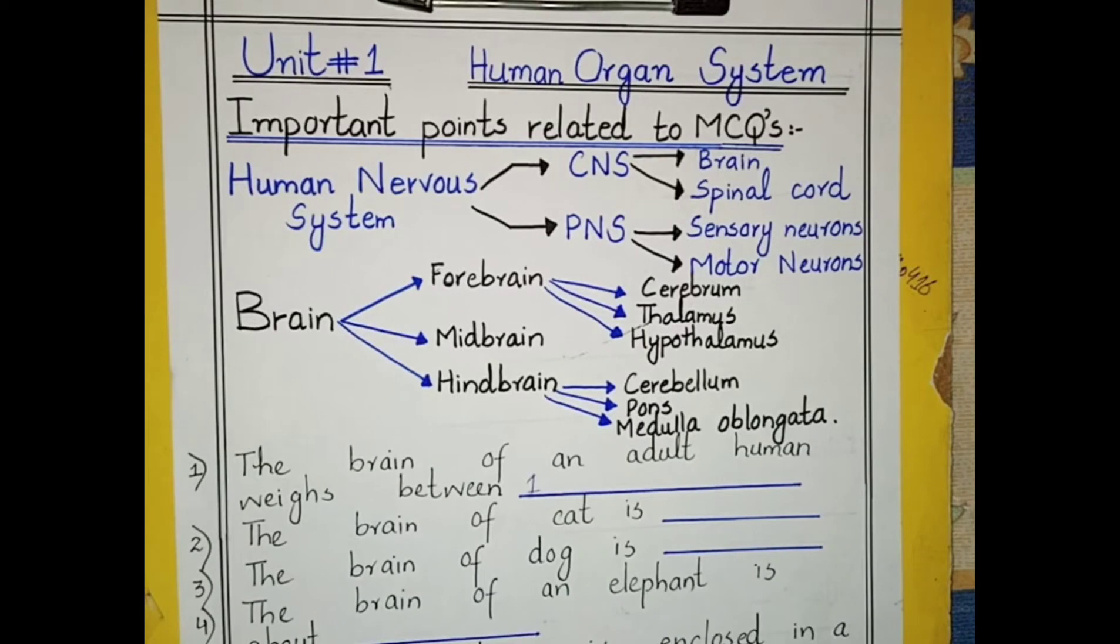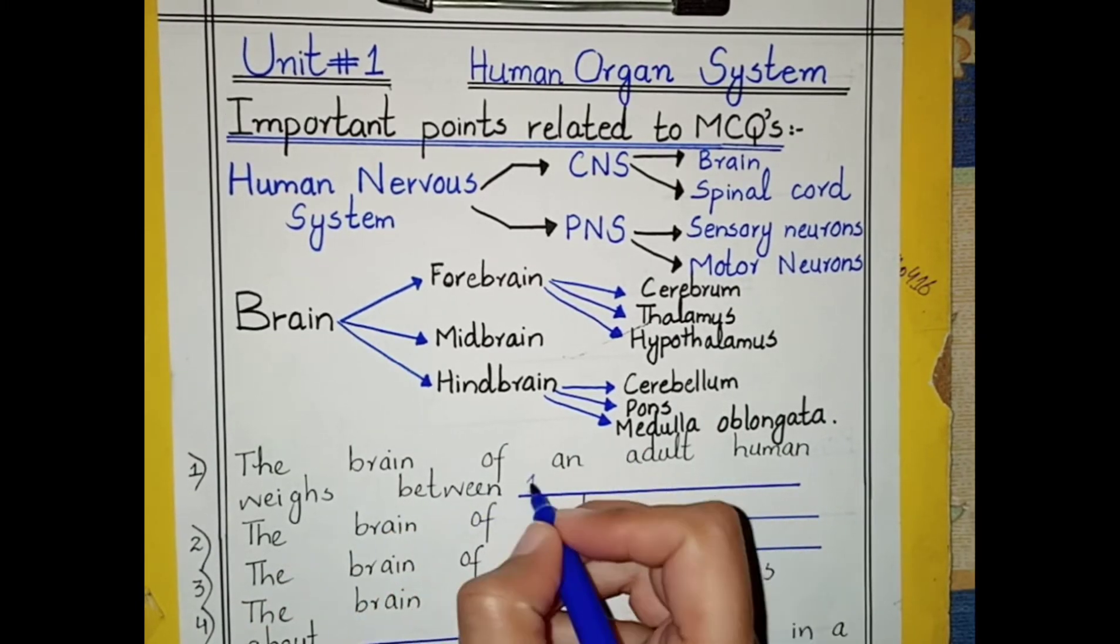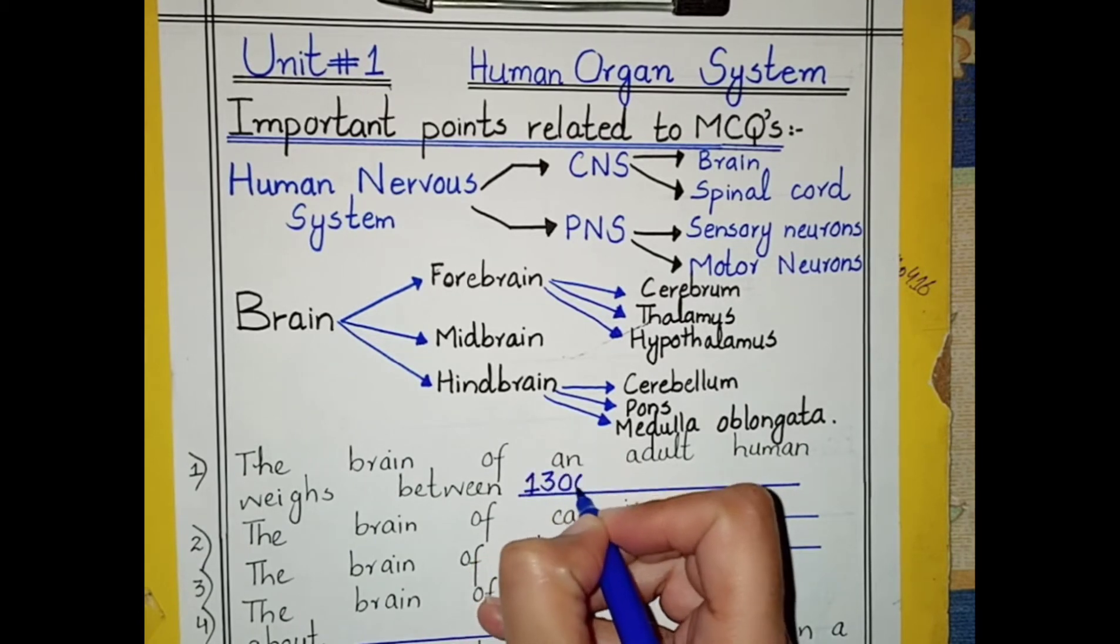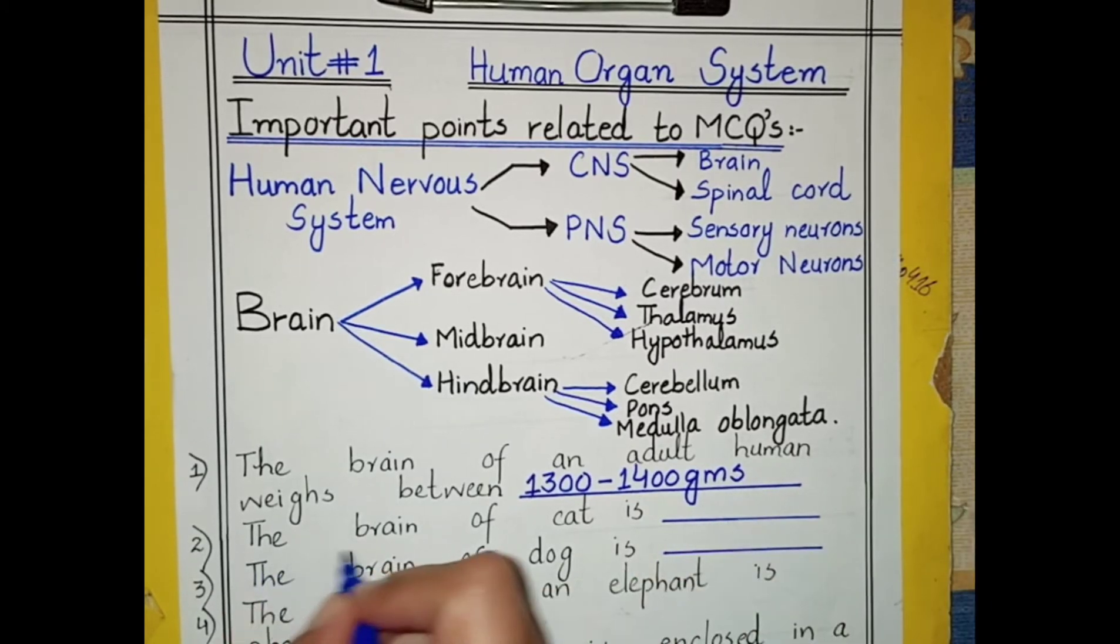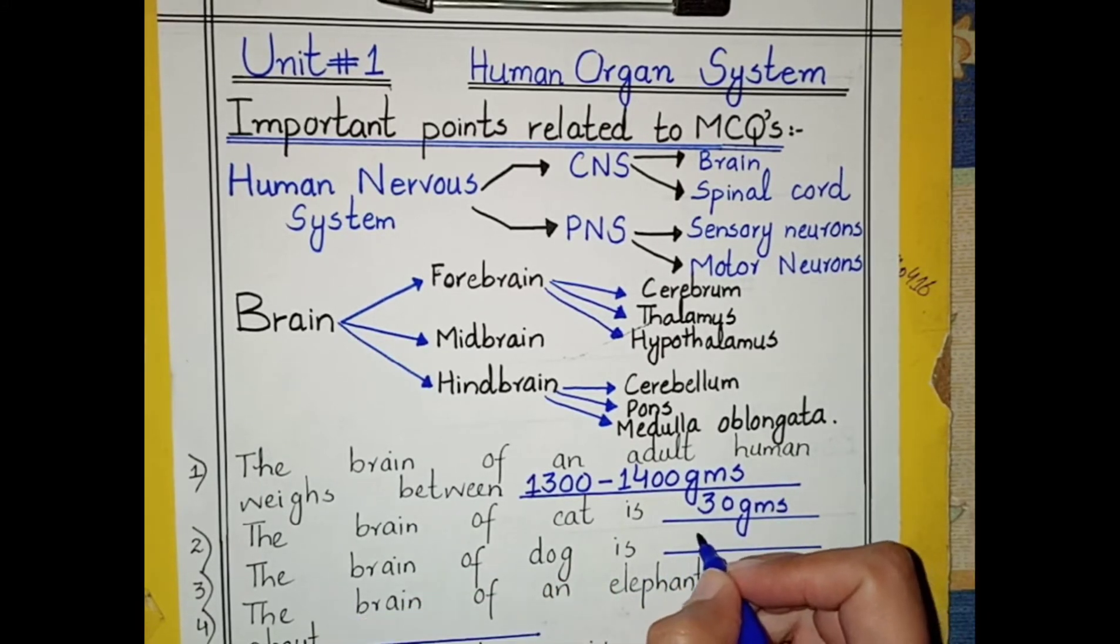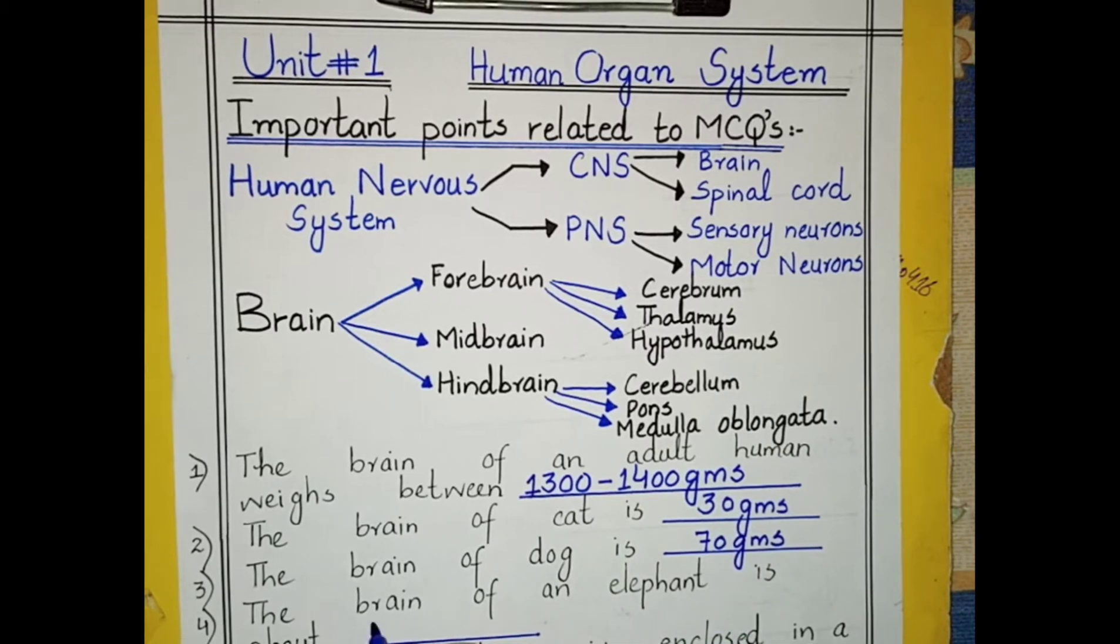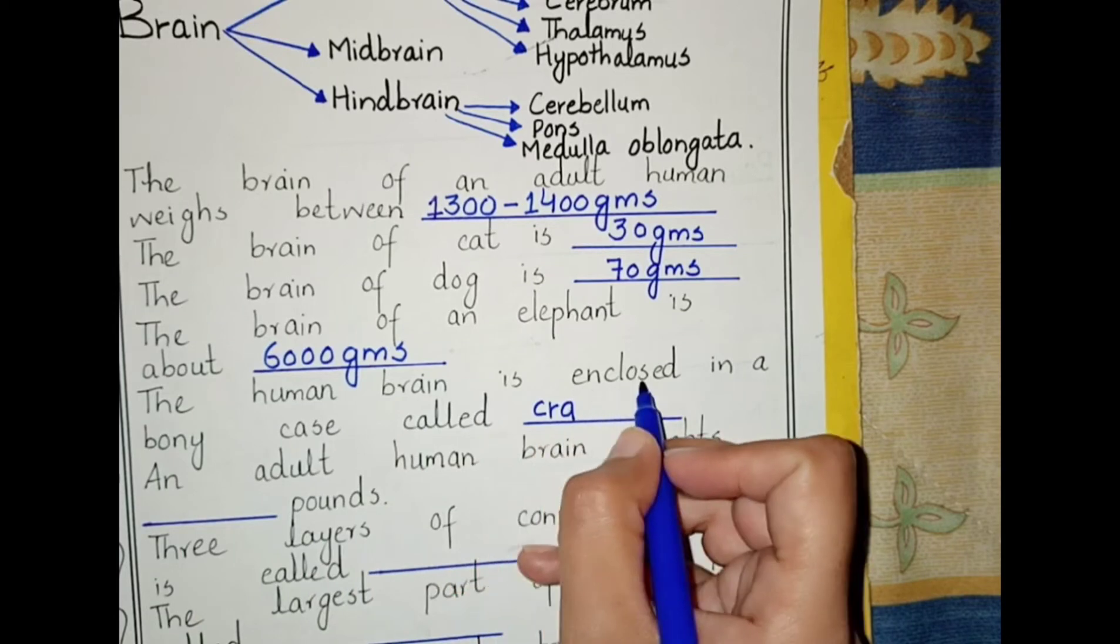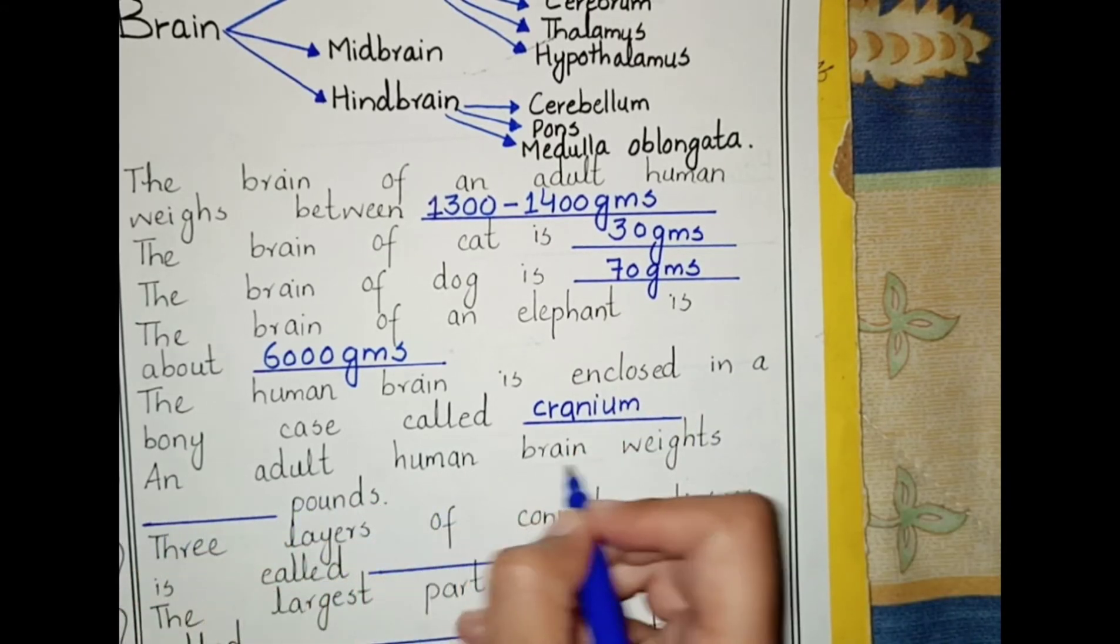Important points related to the human nervous system: The brain of an adult human weighs between 1300 to 1400 grams. The brain of a cat is 30 grams, the brain of a dog is 70 grams, and the brain of an elephant is about 6000 grams.